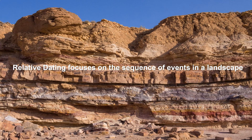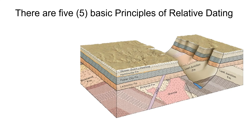Relative dating focuses on the sequence of events in a landscape. We're going to put these layers into an actual order of occurrence. To do so, we have five basic principles of relative dating. The first one is superposition. The principle of superposition basically states that any rock layer on top of a pre-existing rock layer is going to be younger than the layer it is on top of. So the Skinner Gulch limestone is actually younger than the Hamlinville formation, which is younger than the Foster City. We put these things in order from the youngest event to the oldest event.